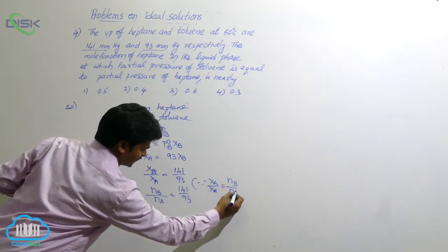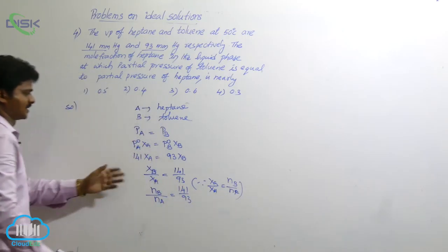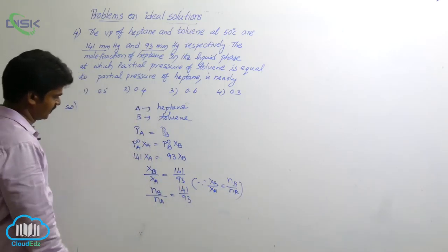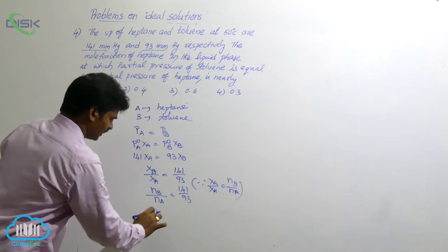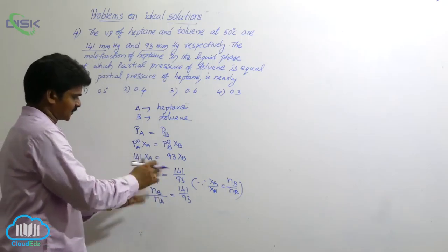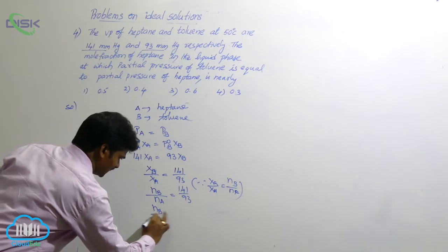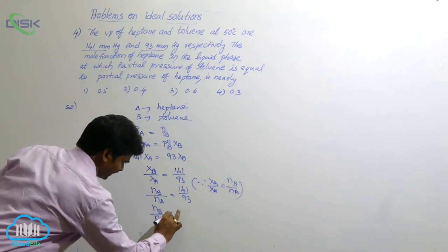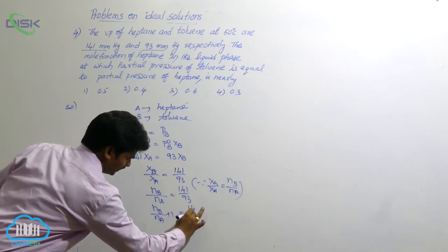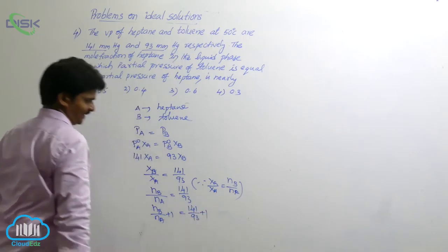So, because of that reason, I have converted the mole fraction ratio into moles ratio. Now, let us add plus 1, both sides add plus 1. Then, we will get NB by NA plus 1 on this side. Similarly, 141 by 93 plus 1 on this side.